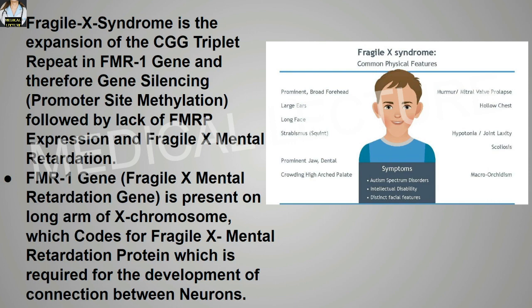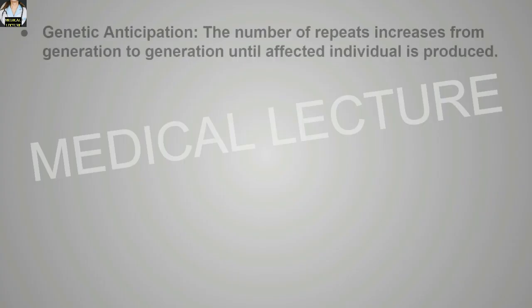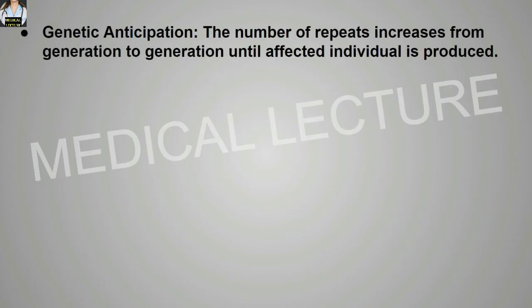In Fragile X syndrome, the FMR1 gene gets mutated because there is expansion of the CGG nucleotide triplet. Genetic anticipation is when the number of repeats increases from generation to generation until an affected individual is produced.